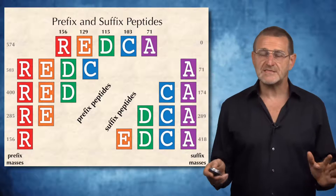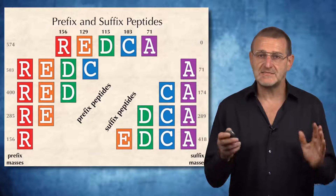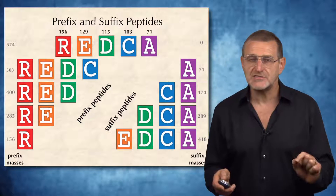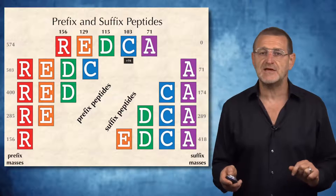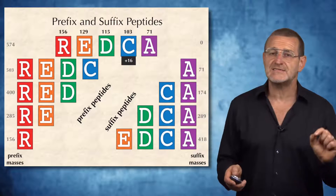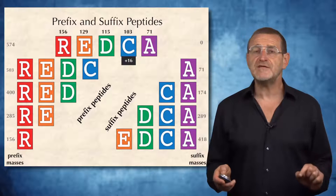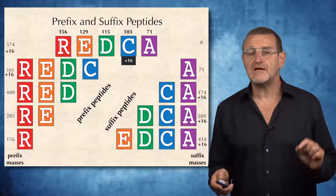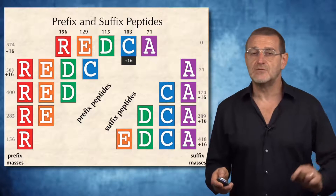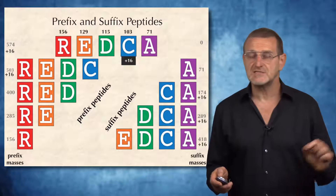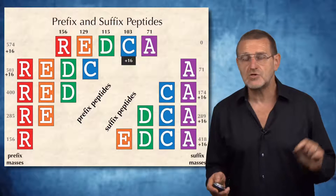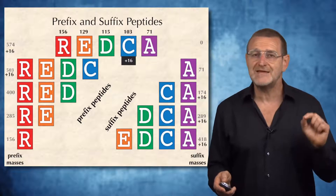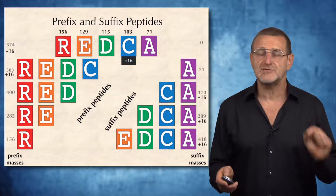In the beginning of this lecture, we looked at the ideal spectrum of this peptide. Let's now look at how this ideal spectrum changes if we introduce a modification on this peptide — here, a modification of C plus 16. This modification affects two prefix peptides and three suffix peptides, so the ideal spectrum has changed. But please note, we don't know in advance what the mass of the modification is, and we don't know on which amino acid this modification is residing.